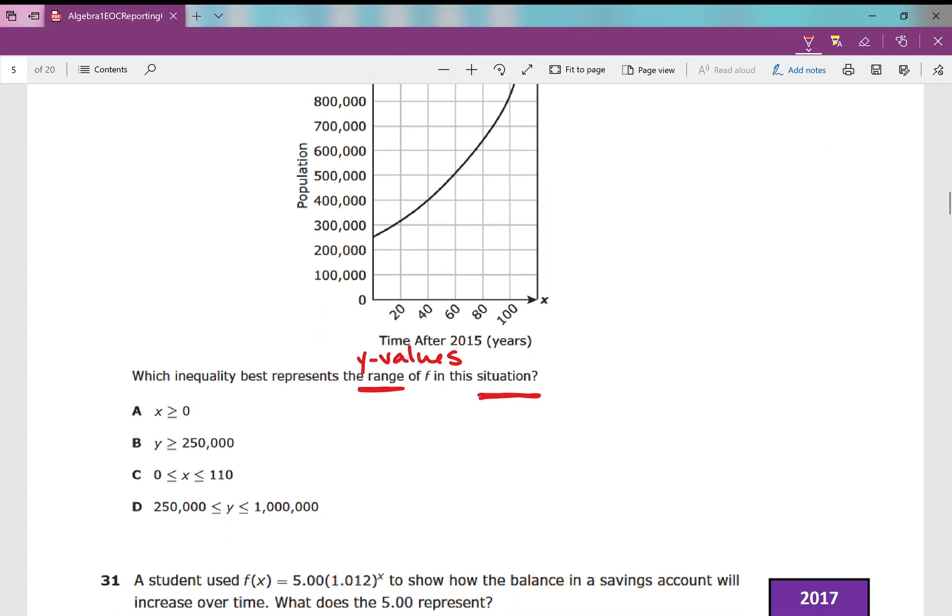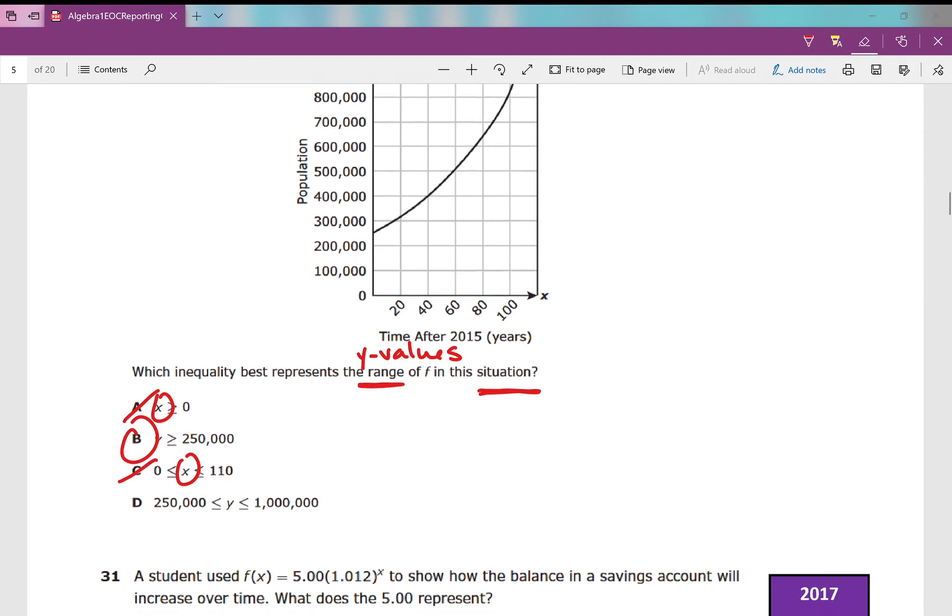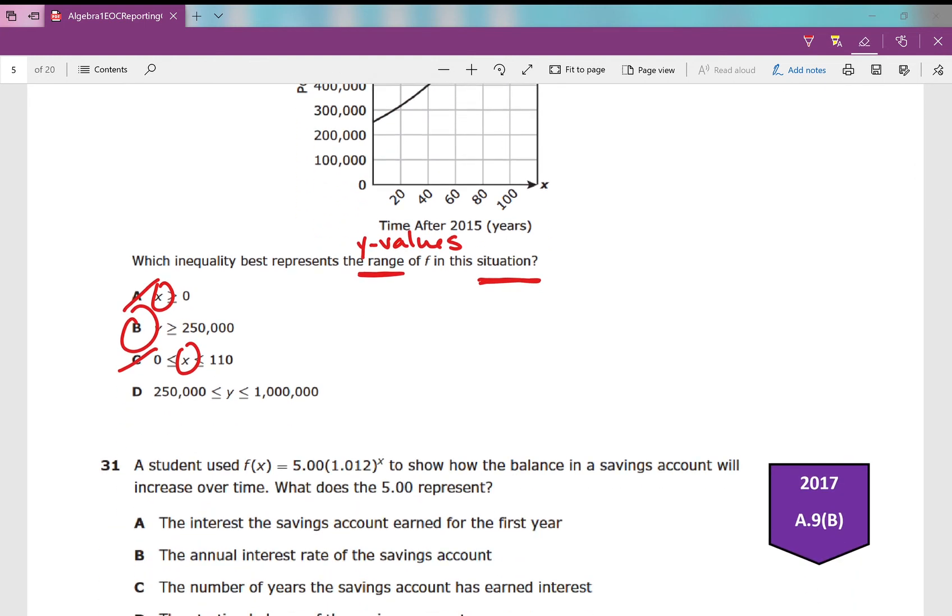Are there any that you can eliminate? I can eliminate c, I can eliminate a. I'm looking at the y values. So what's it going to be? We're starting here, which is about 250,000. Y goes up after that, so b is my answer. Our range is not in between two values—it just goes up to infinity. So y is greater than or equal to 250,000.